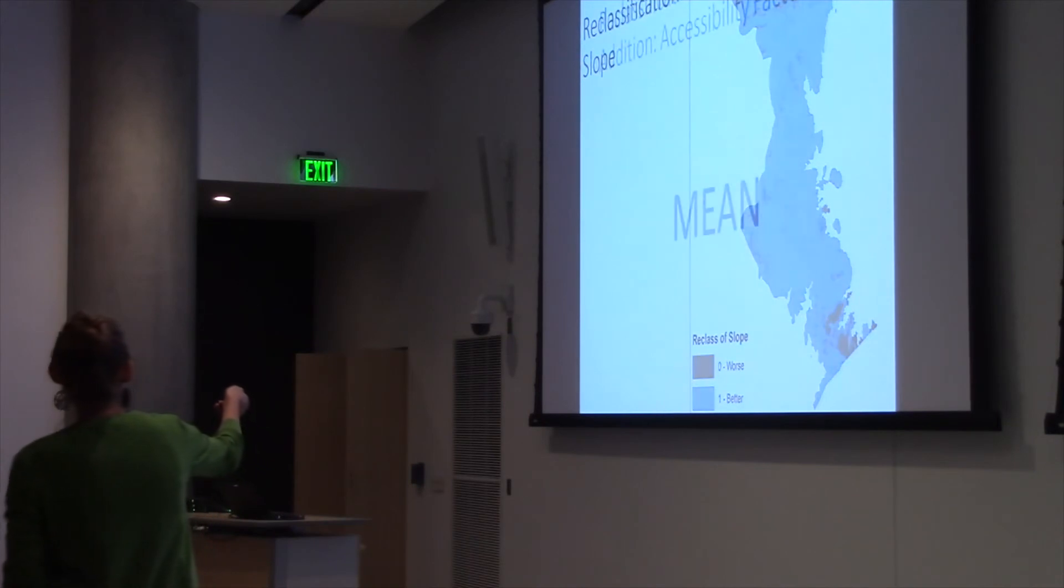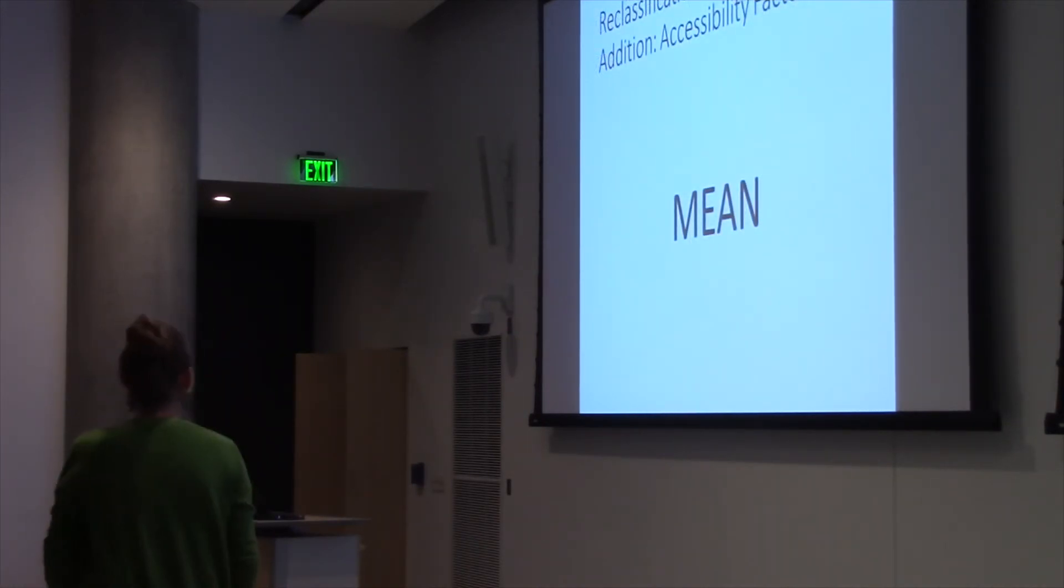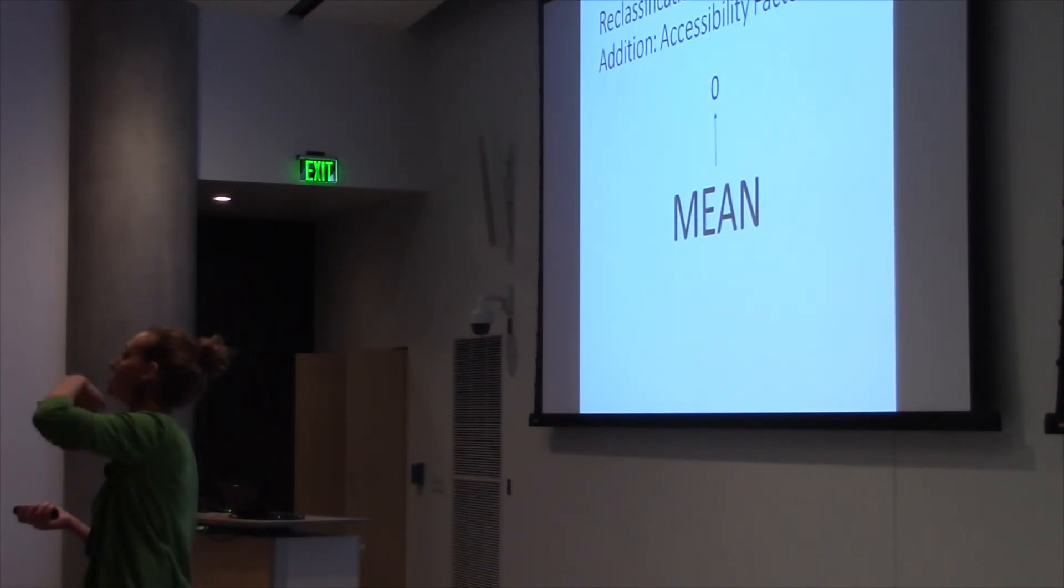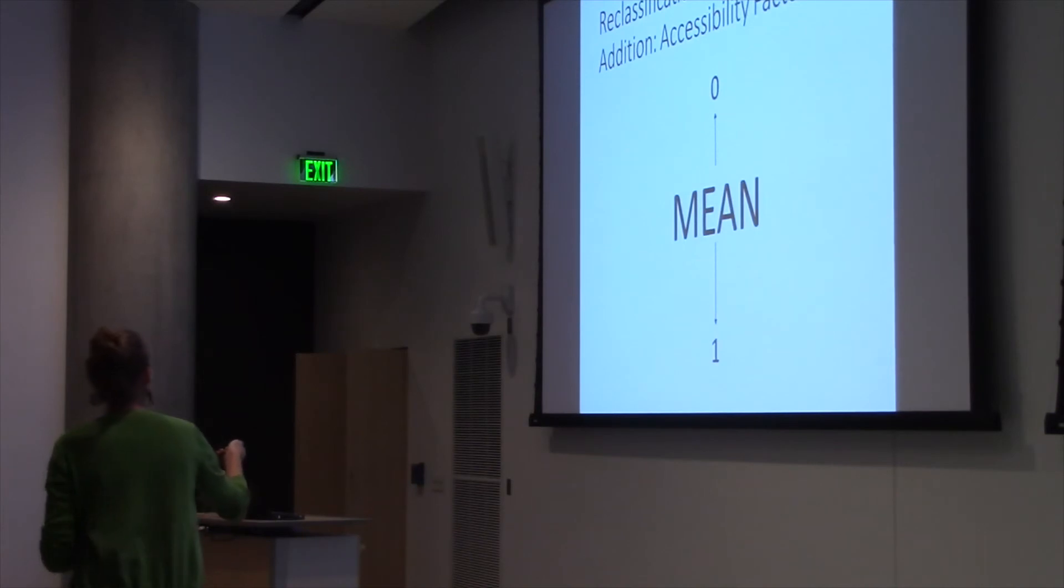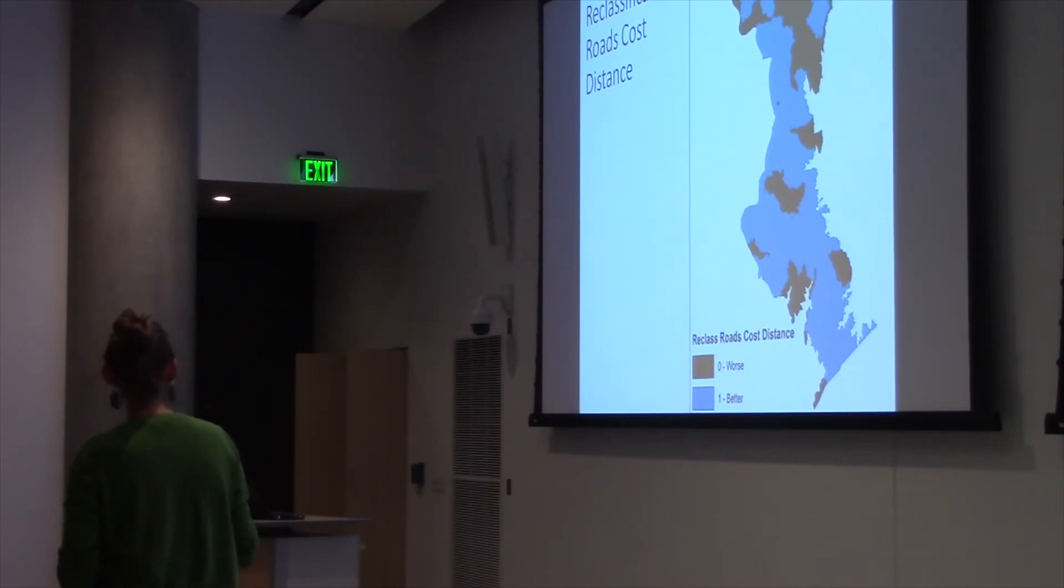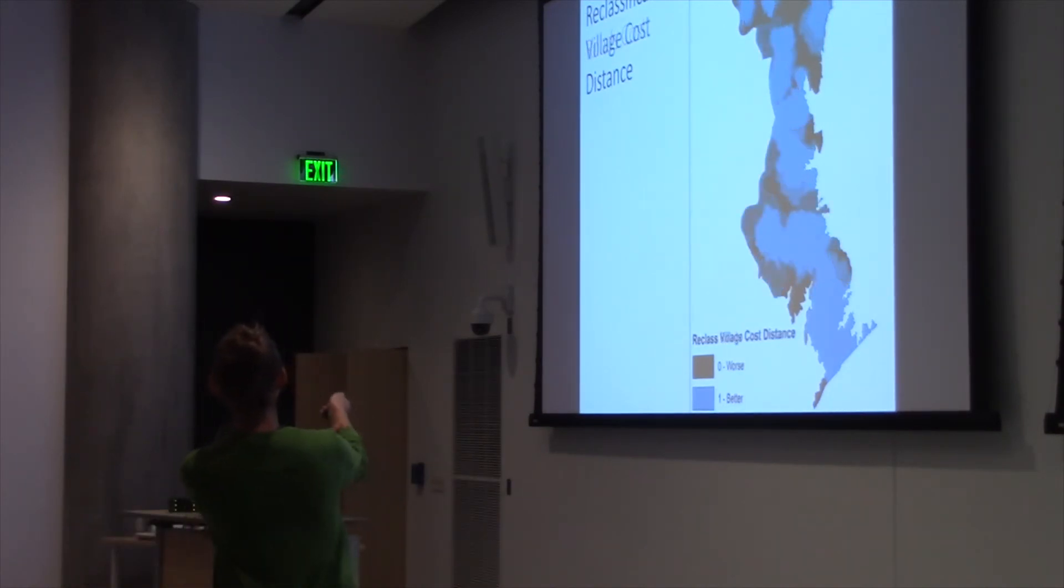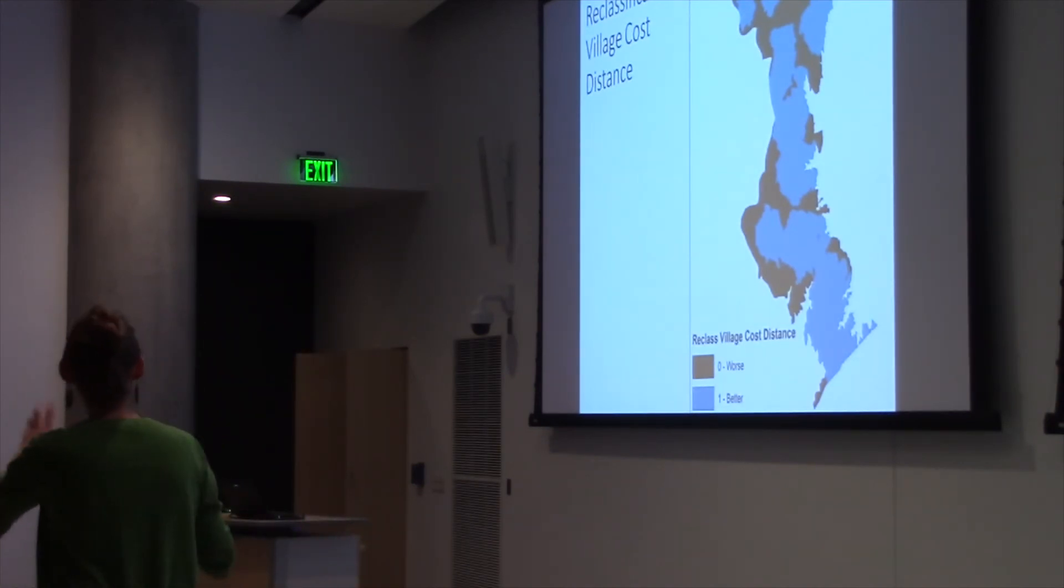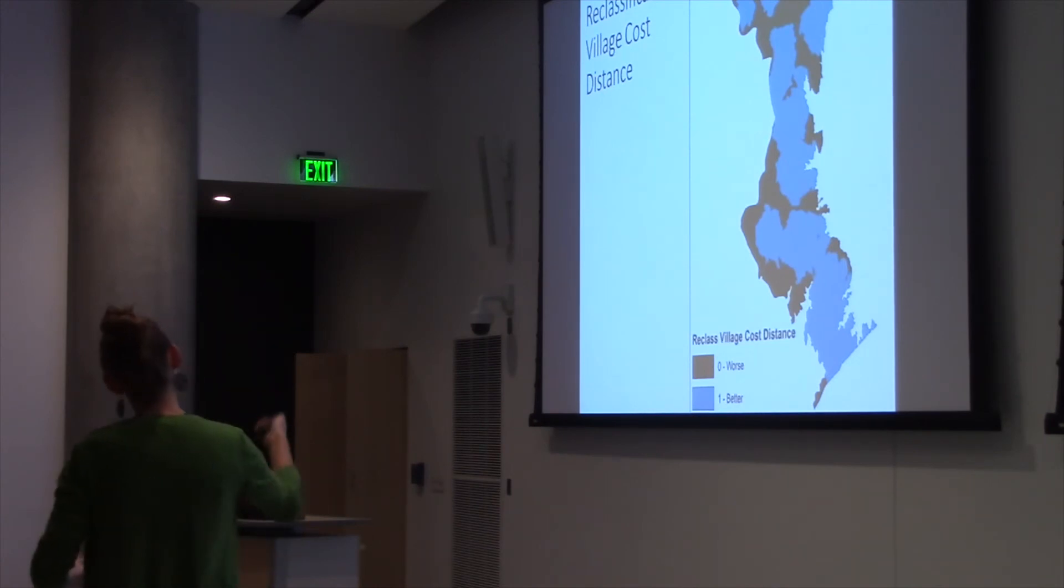For the accessibility factors, I used mean to reclassify, and anything above the mean cost distance was reclassified as zero. It's harder than average to get there. People are probably not going to go there. Anything below the mean was reclassified as one. This actually gave me quite nice results as well. The roads cost distance, you can see that we have quite a bit that's actually better. Not a lot that's worse. Same thing with the village cost distance. Quite a bit. Nice large polygons that are better. Nice large polygons that are worse.